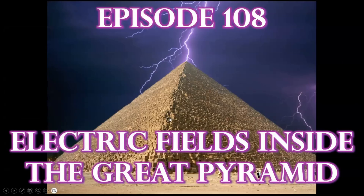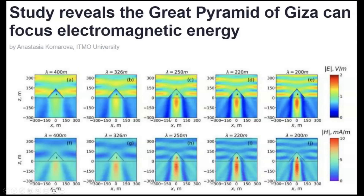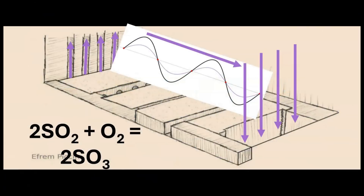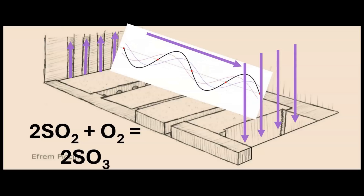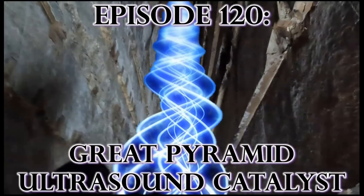As explained in Episode 108, presenting the paper 'Study Reveals the Great Pyramid of Giza Can Focus Electromagnetic Energy,' those electric fields within the quartz-filled red granite of the sulfur furnace — an acoustic catalyst chamber — provided the power source for the inverse piezoelectric sono-chemical reactions involved in the production of the Great Pyramid product: a dilute solution of sulfuric acid, as most recently described in Episode 120.